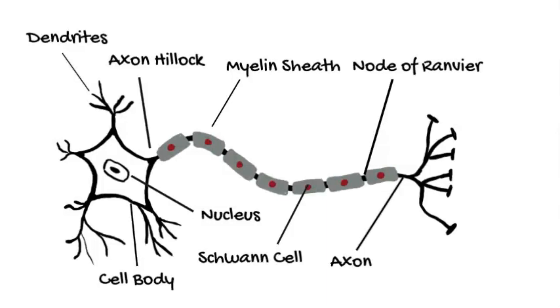At the end of the axon is the axon terminal, shaped like a button. These are the parts of a neuron that make connections called synapses with other neurons. We will cover how synapses work in another class.